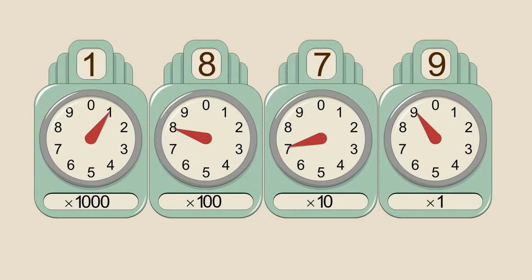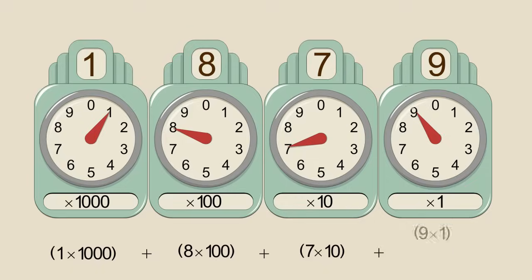For example, the value of the decimal number one thousand eight hundred seventy-nine is one times one thousand, plus eight times one hundred, plus seven times ten, plus nine times one.